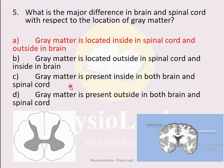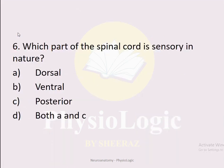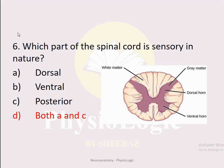Gray matter is located inside in the spinal cord — the H-shape or butterfly-shape structure — and outside in the brain. White matter is inside in the brain. MCQ number six: Which part of the spinal cord is sensory in nature? Option A: dorsal. Option B: ventral. Option C: posterior. Option D: both A and C. The correct option is D, both A and C.